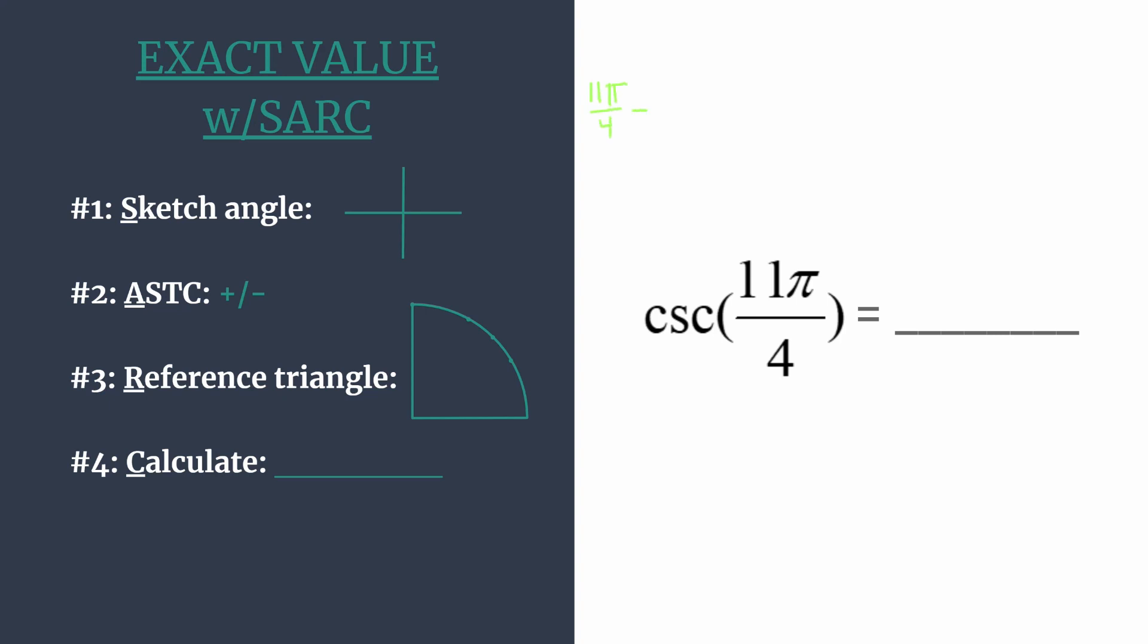We want to subtract 2π, but let's get a common denominator. So that's going to be rewritten as 8π/4. And we get that that's going to be 3π/4.